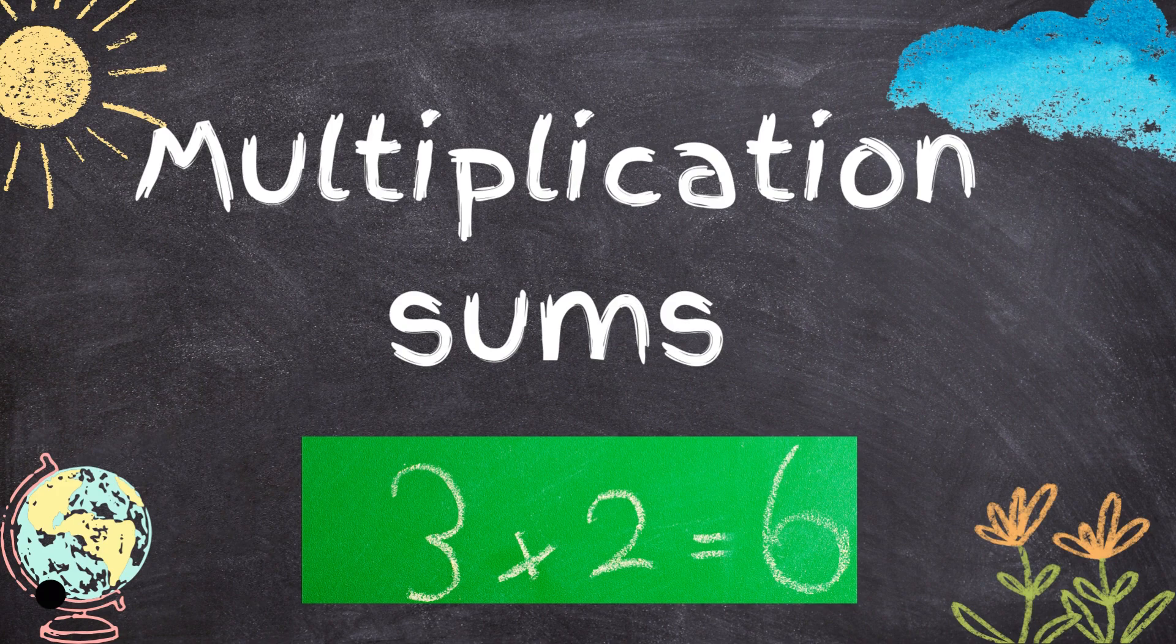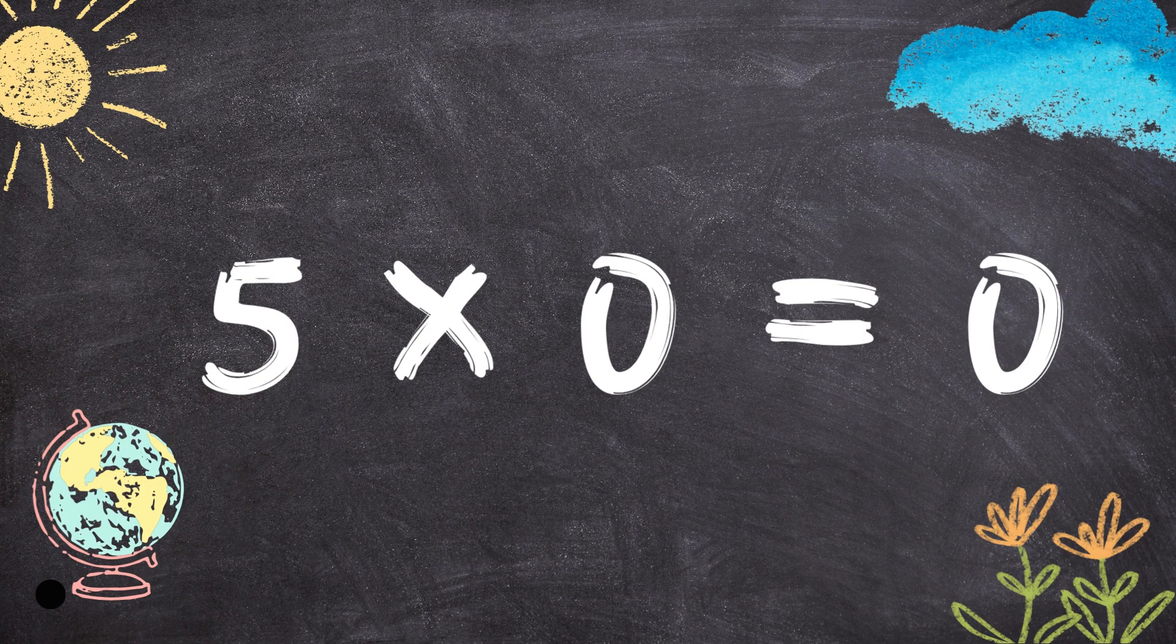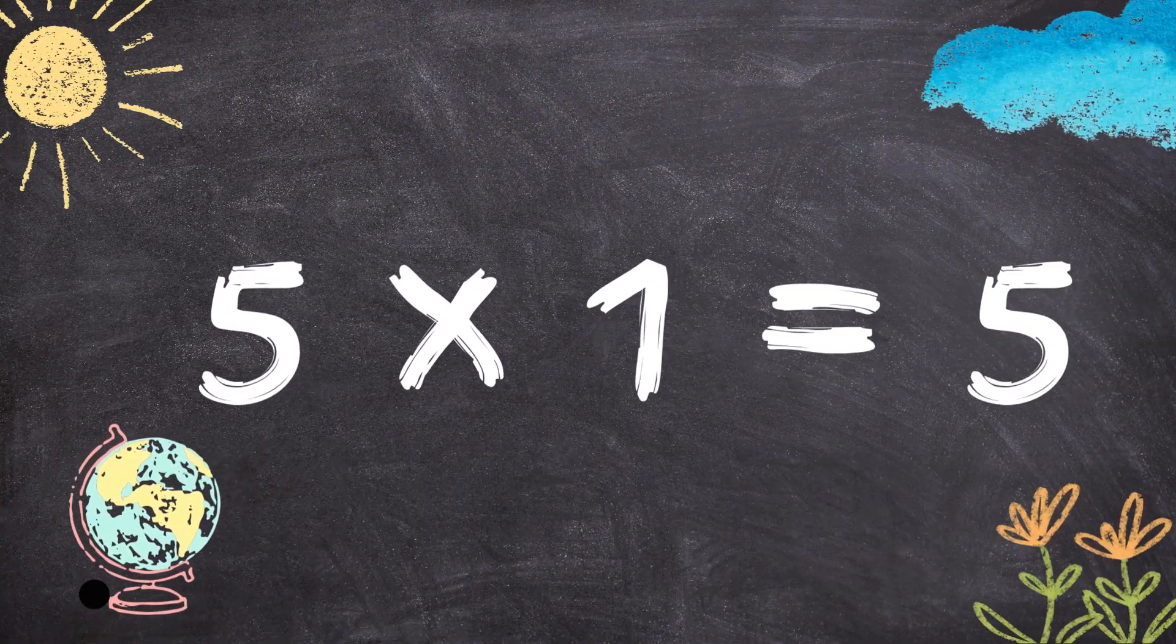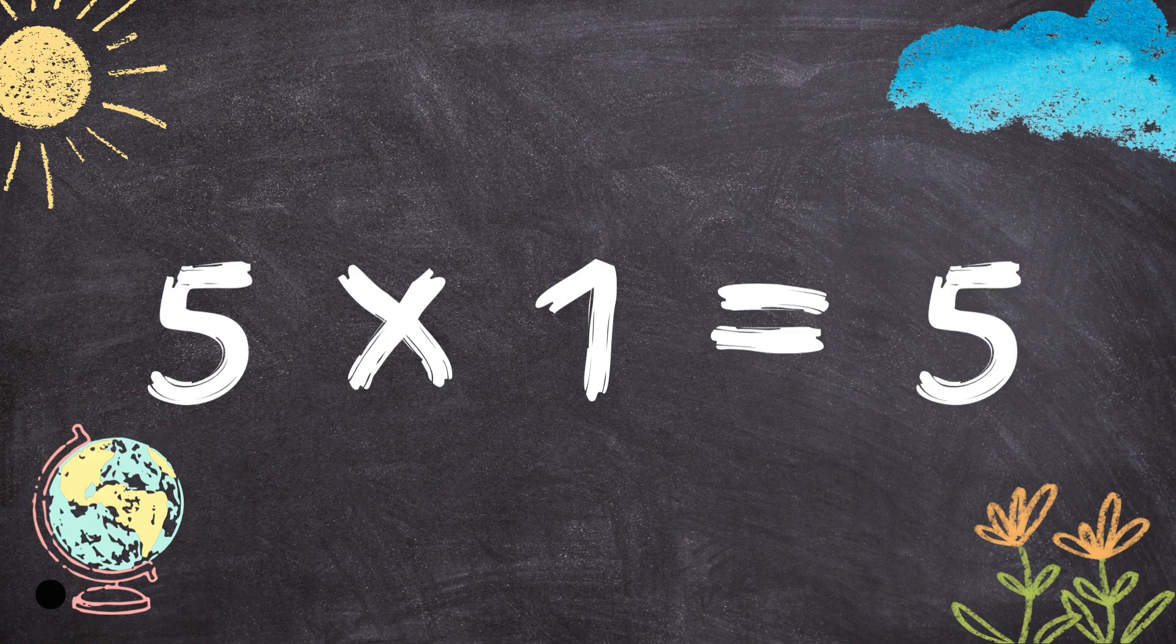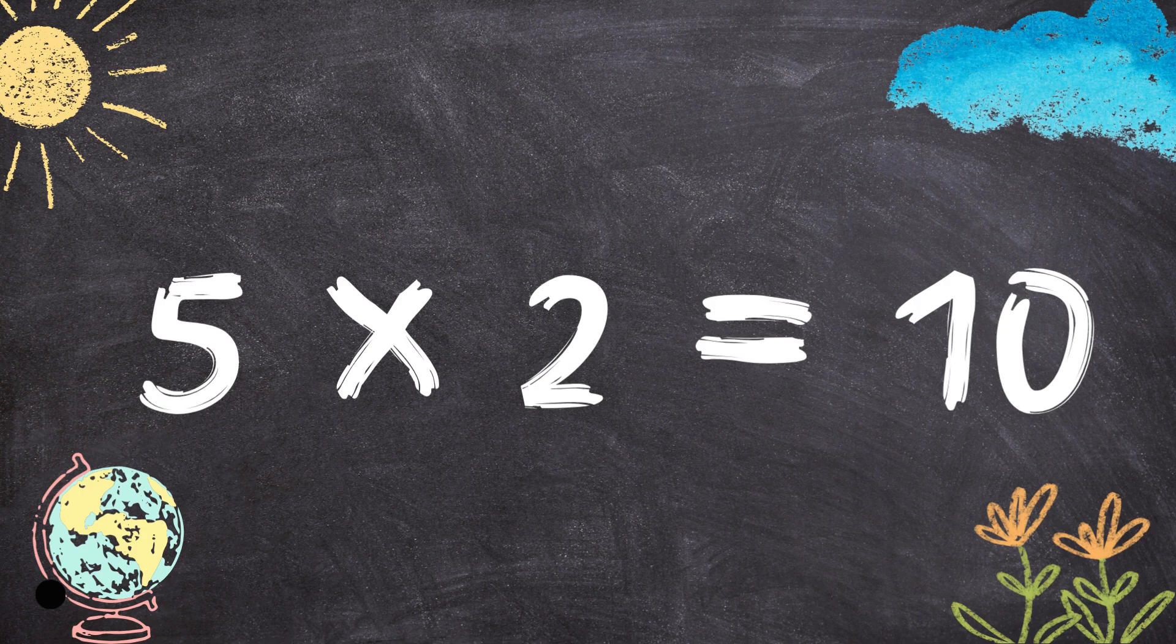Let's start! 5 times 0 equals 0. 5 times 1 equals 5. 5 times 2 equals 10.